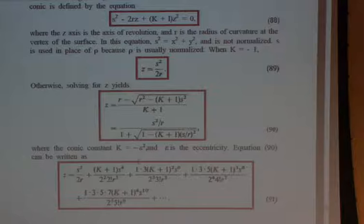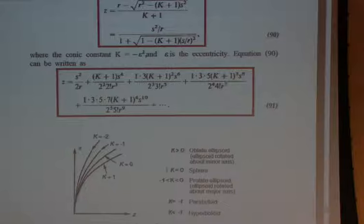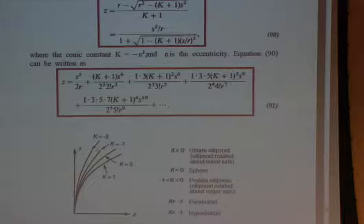Looking at curves drawn here for the types of conics: if we have a sphere, K equals zero — that's the spherical surface. With K of minus 1 that's our paraboloid. We also have ellipsoids and hyperboloids. One thing good to know: comparing sphere and paraboloid, the parabola is a little flatter than the sphere. When we get to testing aspheres, that will come up again.